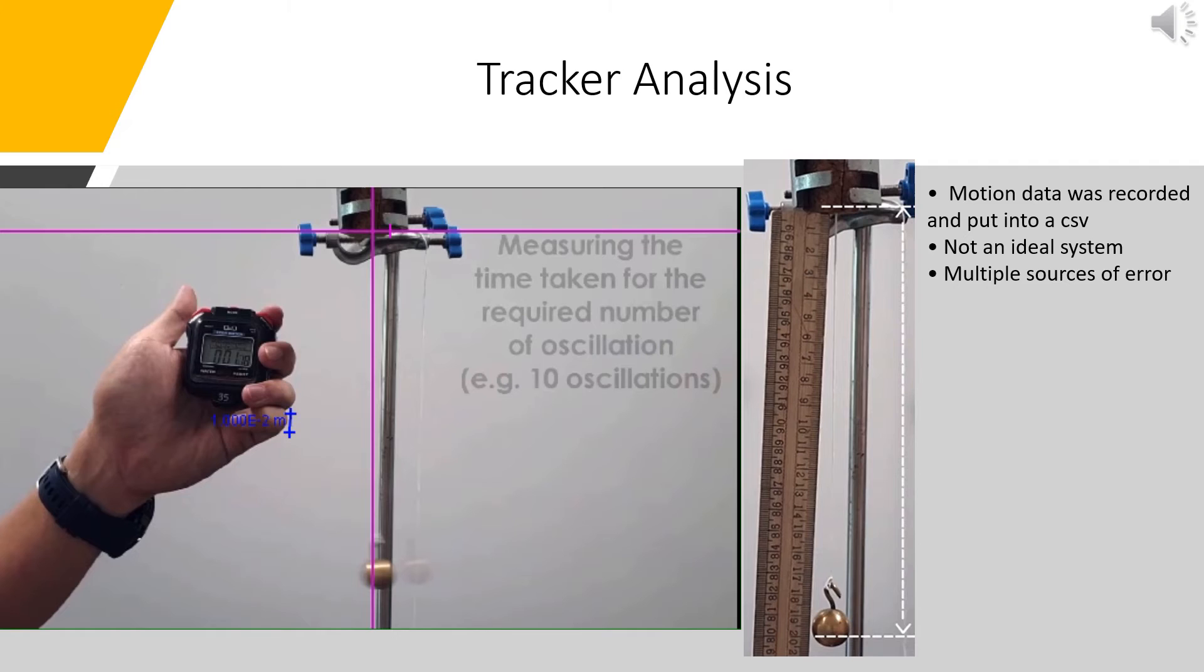Secondly, another source of error is the string holding the mass up. In my model, we assume the string does not apply a spring force on the mass. However, real strings do not act as ideal strings do, so there is a spring force upon the ball. Finally, one last source of error from the video is the human error present in the selection of the position each frame.